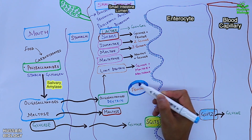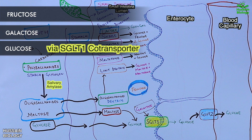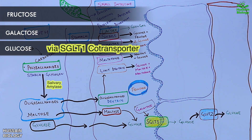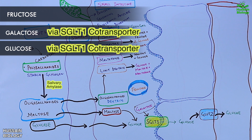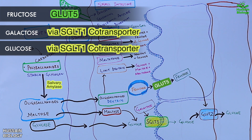Three monosaccharides are now formed: fructose, galactose, and glucose — all of which can be absorbed. Glucose and galactose are absorbed into enterocytes via the SGLT1 transporter and then transported into circulation via GLUT2, as shown in the diagram. Fructose enters enterocytes via the GLUT5 transporter protein and then enters circulation via GLUT2.